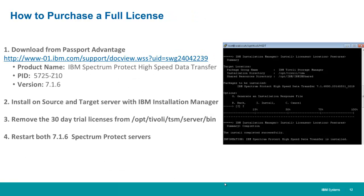Once you've tested with the 30-day trial license and are ready to purchase a full license for each Spectrum Protect server, go into Passport Advantage and purchase the product called IBM Spectrum Protect High Speed Data Transfer, PID 5725-Z10. Download the product and install it on both your source and target servers using IBM Installation Manager. Remove the 30-day trial licenses from the Optivoli TSM server bin and restart both Spectrum Protect servers.